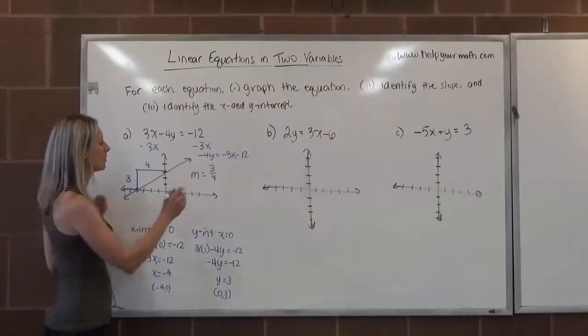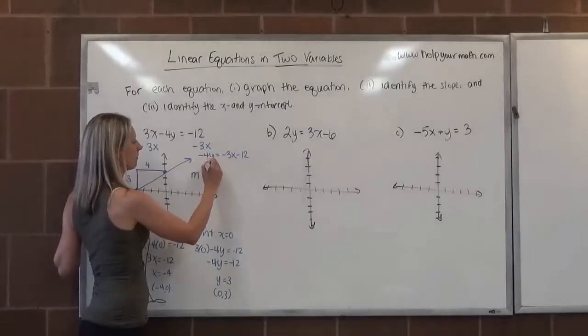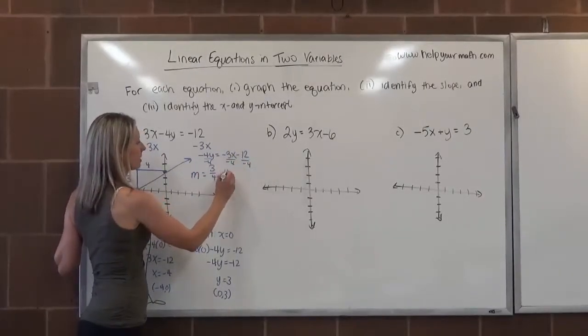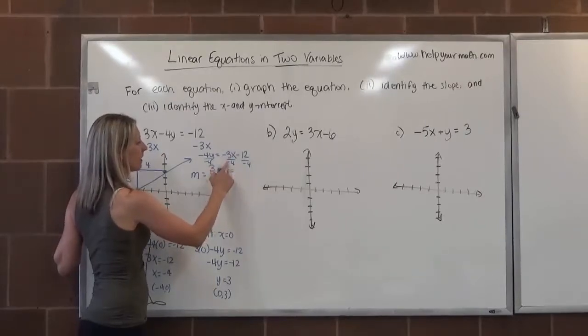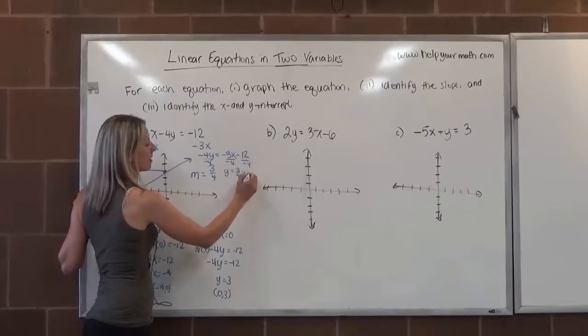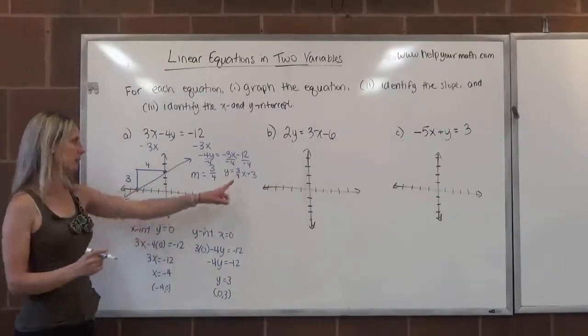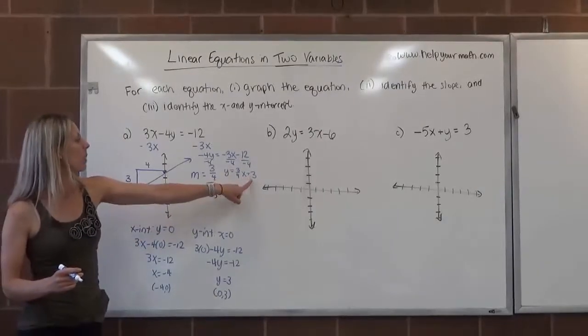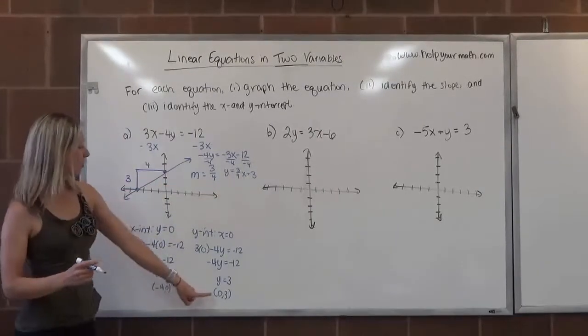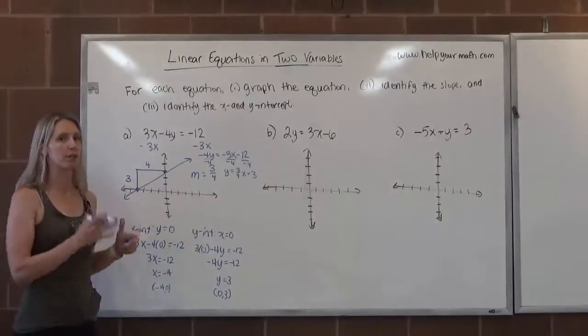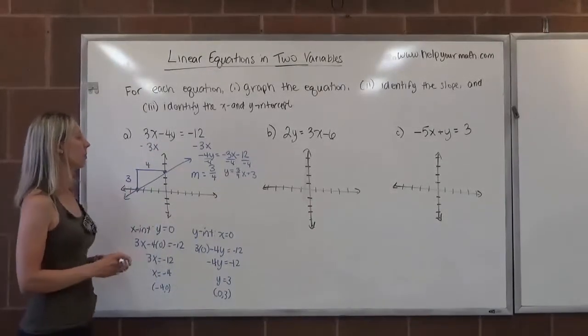Now to get y by itself, we will divide all three terms by negative 4. And that gives us y equals 3 fourths x plus 3. So here it says that the slope should be 3 fourths, which is what we found based on the graph. Here it says the y intercept should be 3, which we found when we had it in standard form. So everything kind of works out together as it should with these equations.